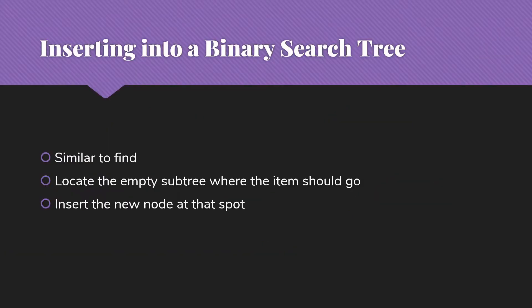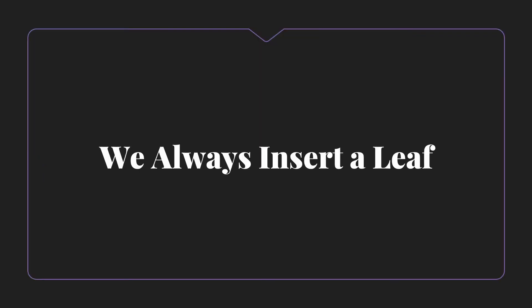In order to have anything to look for, I of course need to be able to insert into my tree. The process here is similar to the find — we're going to locate the empty subtree where the item should go, and then insert the new node at that spot. It's important to understand that we always insert leaves into our tree. We never mess with the structure of the tree during insertion.